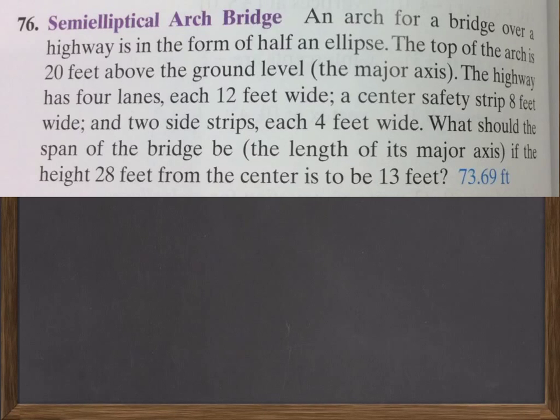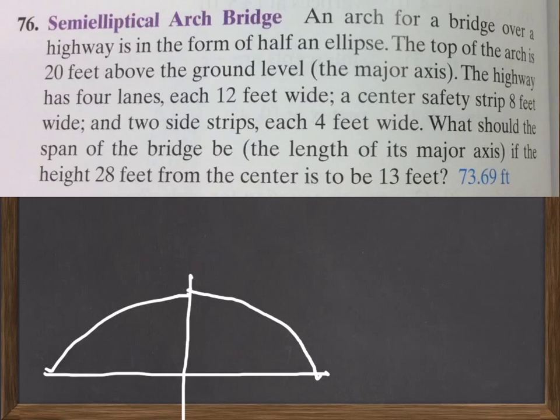So, what we have here is our ellipse. That's the kind of cross-section side view of the arch. And we know that the arch is 20 feet above the center.